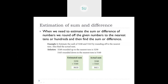We saw various examples. One example was 3,248 and 5,163. To find the estimated sum, you round off the numbers. 3,248 rounded to the nearest tens becomes 3,250, and 5,163 rounds off to 5,160. Adding these two gives 8,410. For the actual sum, you just add the given numbers as they are.